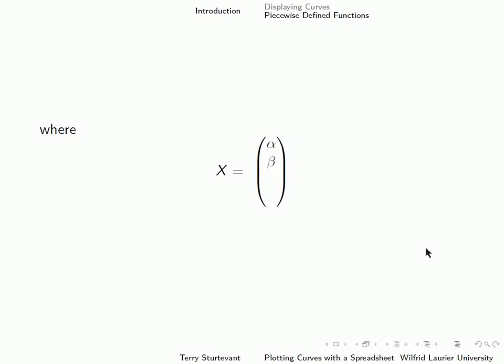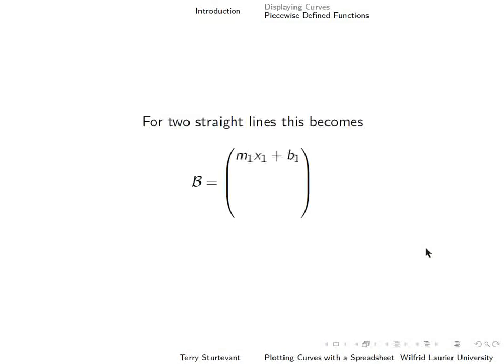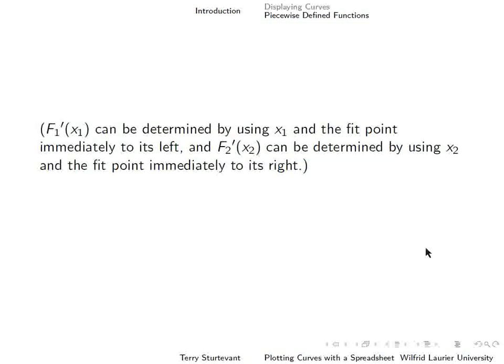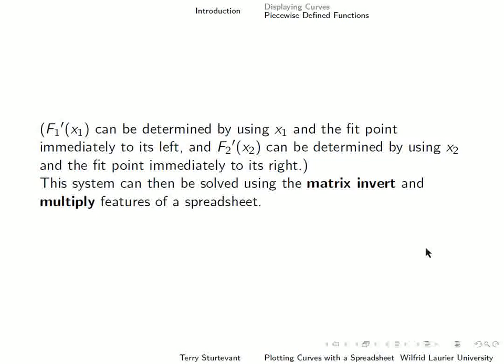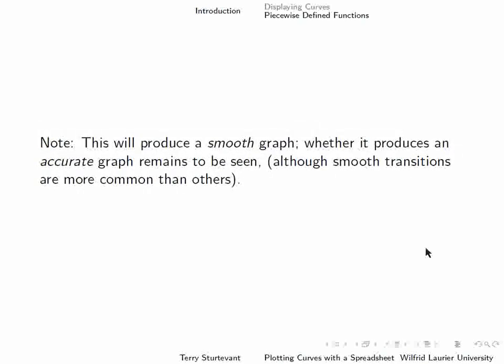So we want to get these four values that make things true. The solution we get is like that. So this will produce a smooth graph. Whether that curve in between those lines is actually what the data actually do in there is a different question.